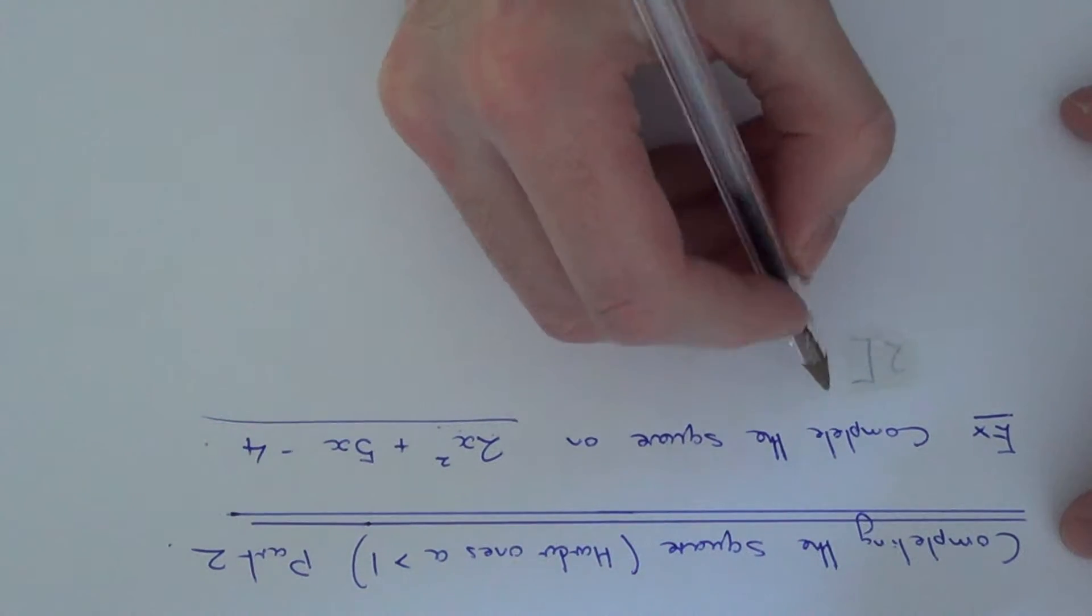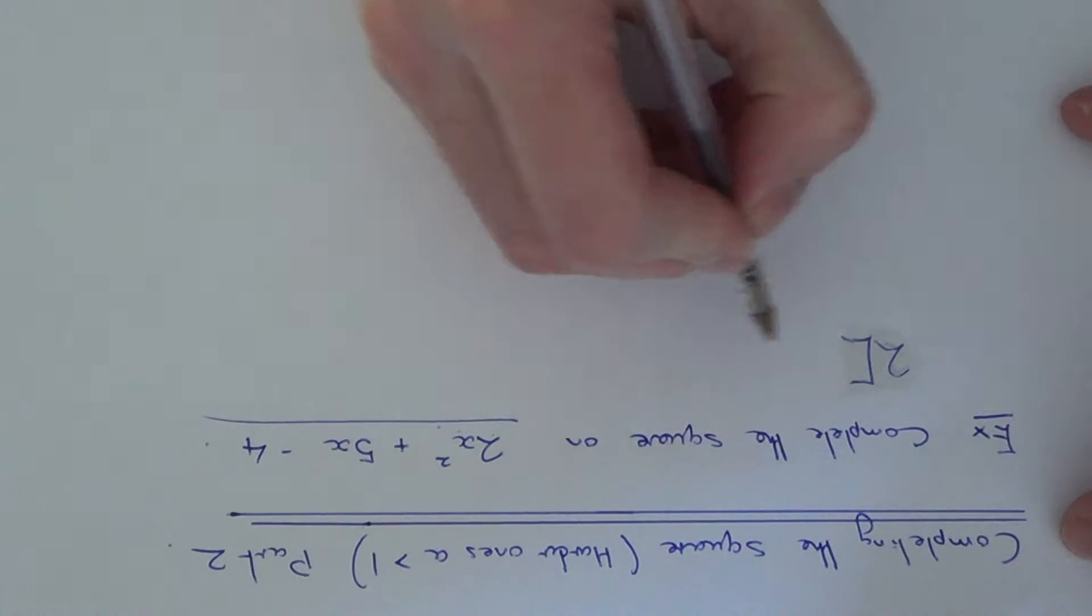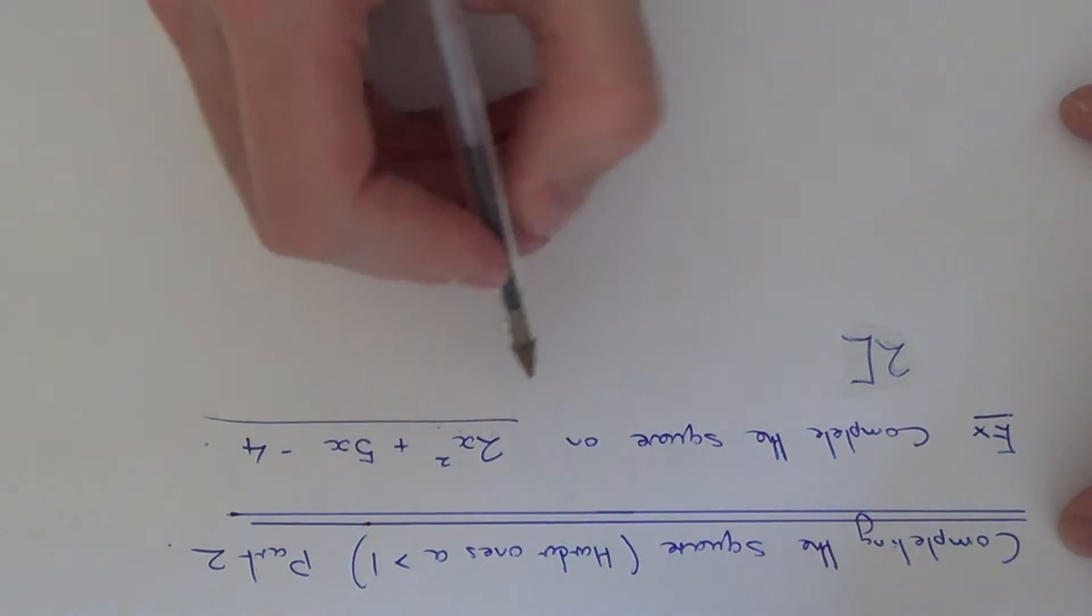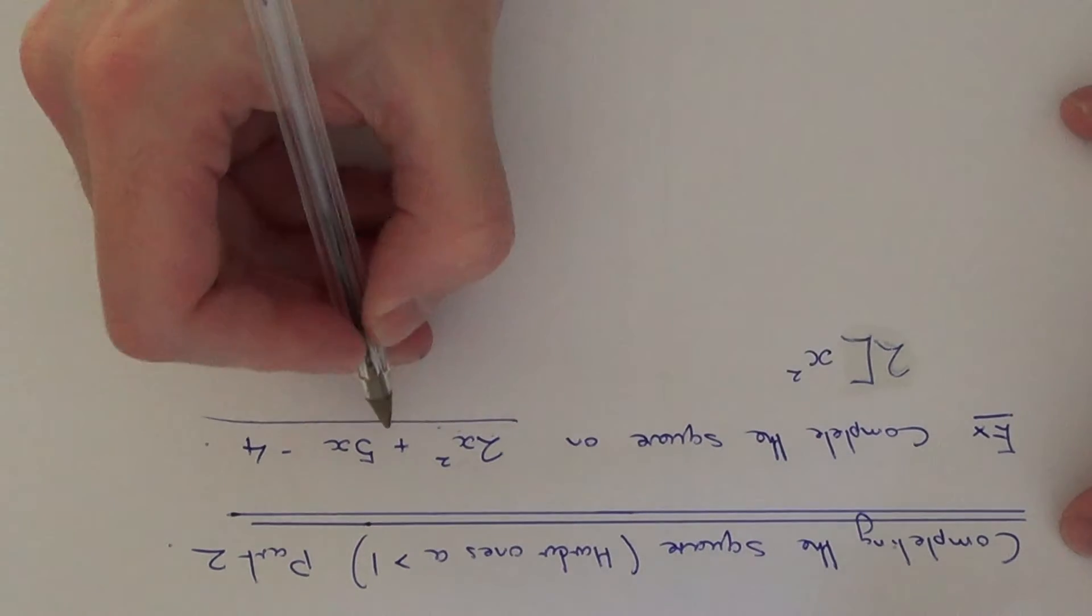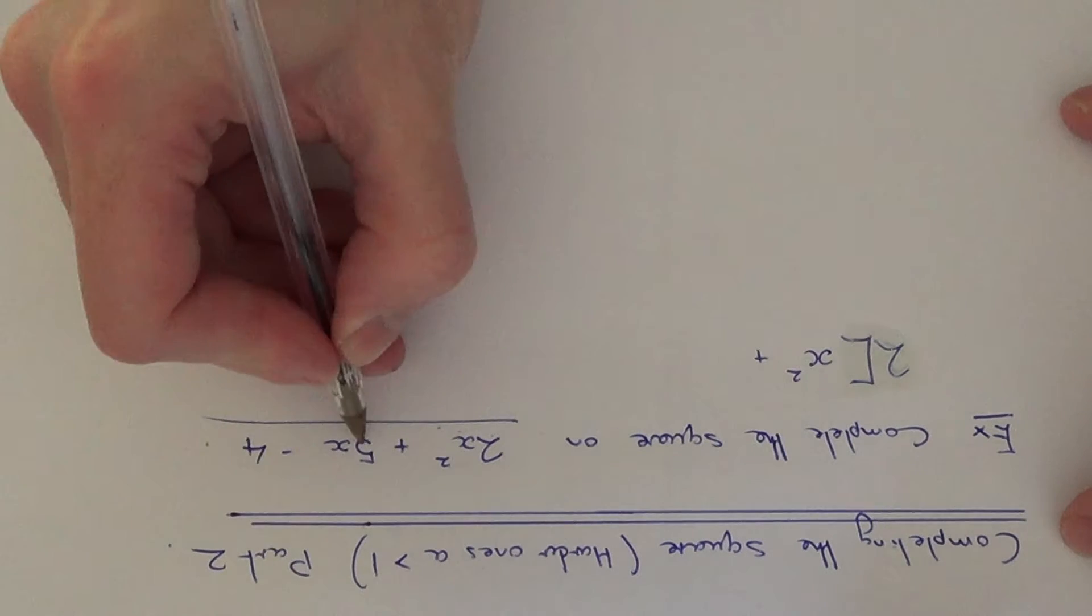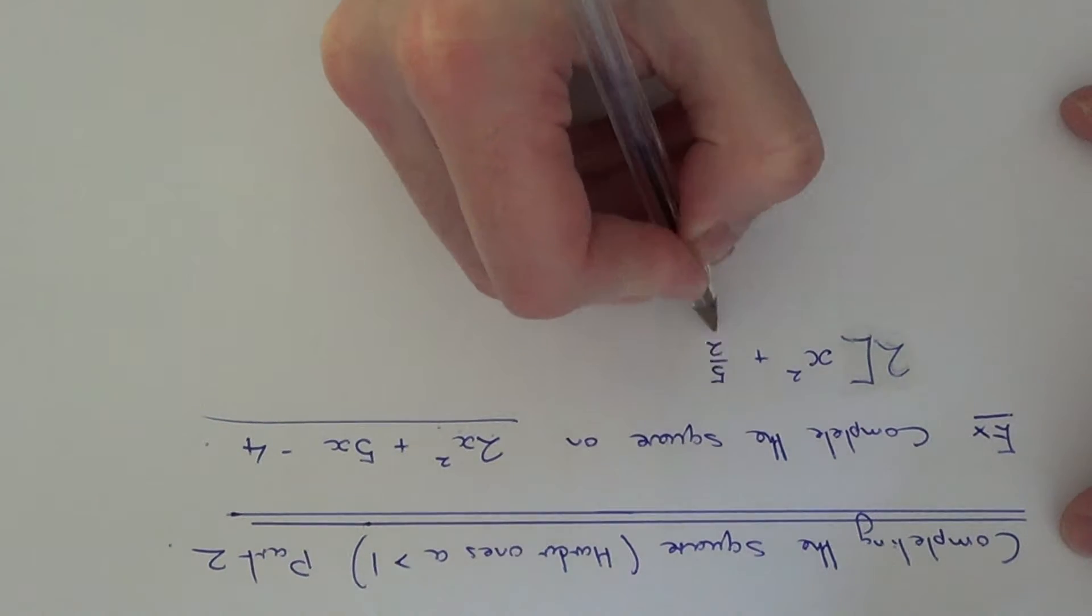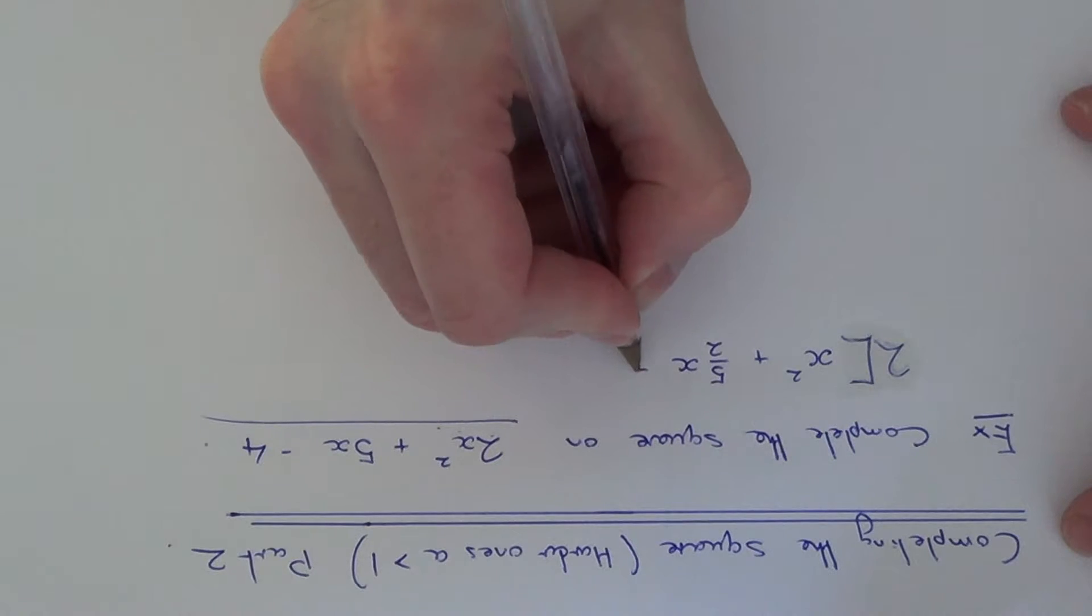So I am just going to take that 2 out and do a big square bracket and I am going to divide all this quadratic by 2 now. So we will get x squared plus, if I divide this by 2 we will get 5 over 2. You're better just leaving it as an improper fraction, and then divide the minus 4 by 2, which is minus 2.